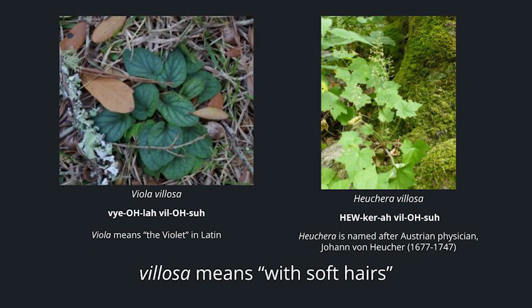Villosa means with soft hairs. So we have Viola villosa — a violet that has hairy leaves and stems — and then Heuchera villosa, a Heuchera that also has hairy leaves and stems.